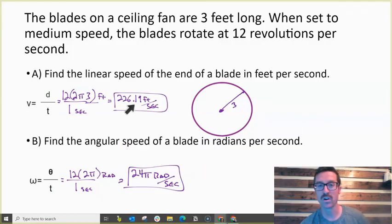Now, the thing about this is if the fan blades were longer, if we took a 4-foot fan blade, this number would increase because that point on the end of the fan blade is traveling a greater distance. But if we increase the length of the fan blade, this number would not increase, because it's still doing the same number of revolutions per second. And that's how you can find linear velocity and angular velocity.